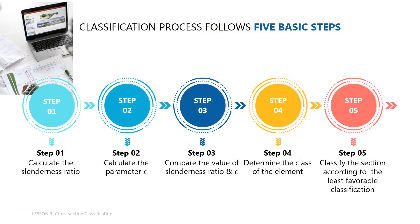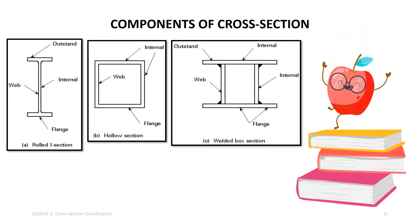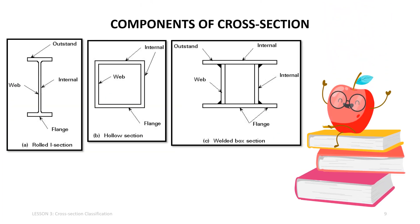The classification process follows five basic steps. First, calculate the slenderness ratio. Second, calculate the parameter epsilon. Third, compare the value of the slenderness ratio and epsilon. Fourth, determine the class of the element. Finally, fifth, classify the section according to the least favorable classification.